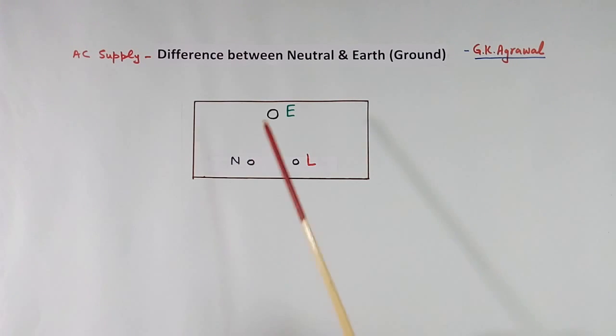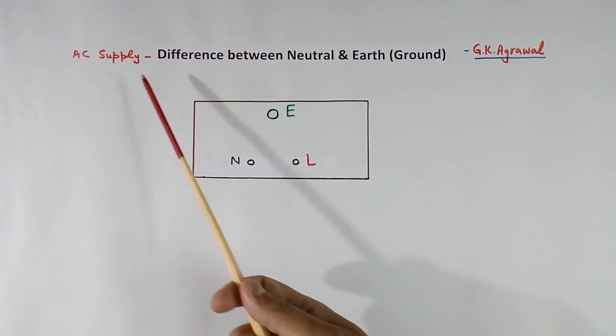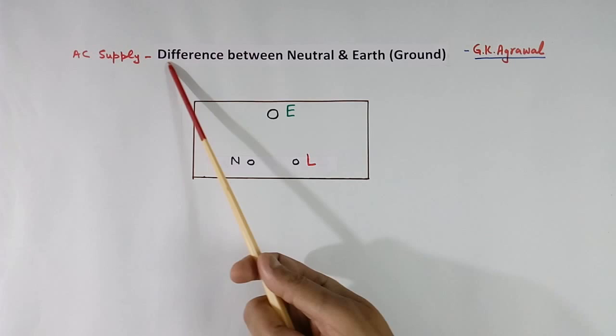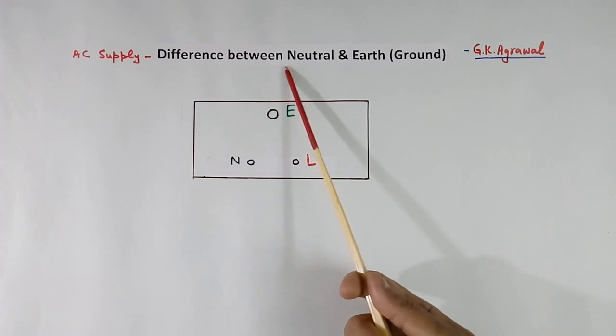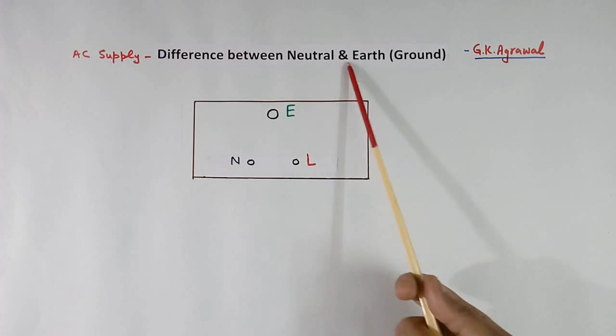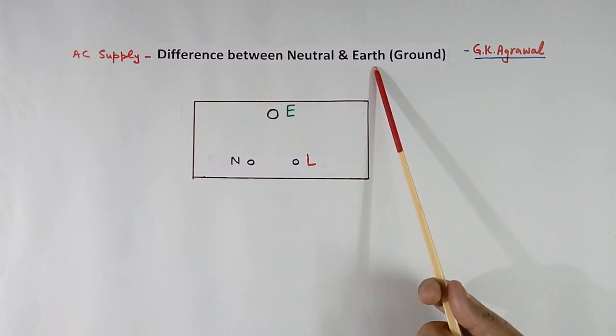Today we will discuss what is the difference between neutral and earth. Earth is also called ground.